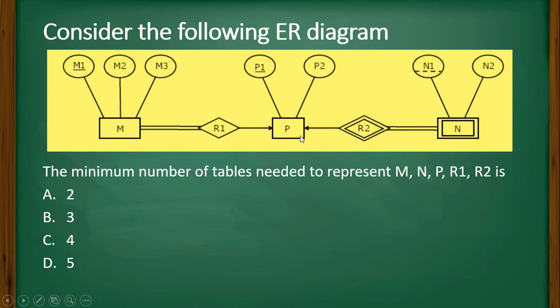M and P are strong entities, and N is a weak entity. M has three attributes and out of them M1 is the key. P has two attributes, P1 is a key, and N has two attributes where N1 is a weak key.